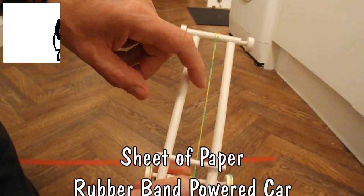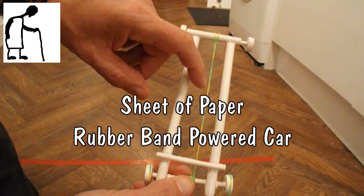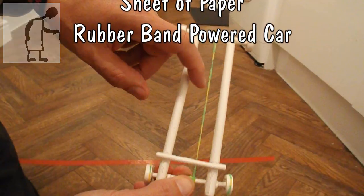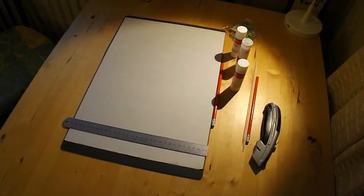Hi guys, I've got a request from Cheryl to make a car from a sheet of paper and rubber bands. Now it's not clear from the request whether it's supposed to be a rubber band powered car, or whether the rubber bands are there to hold the sheet of paper together. Well, I'm going to assume that it's a rubber band powered car.